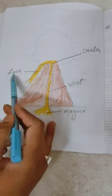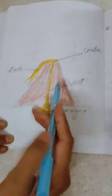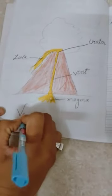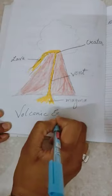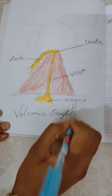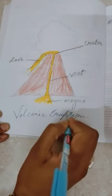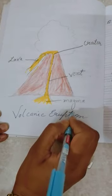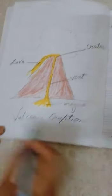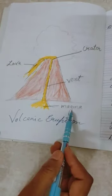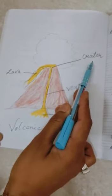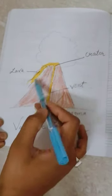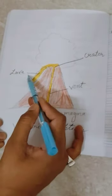When the magma comes out through the vent and the crater, it is called lava. So to summarize: a volcanic eruption starts with magma from inside the earth, it travels up through the vent, exits through the mouth called the crater, and when it flows out it is called lava.